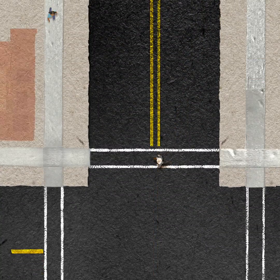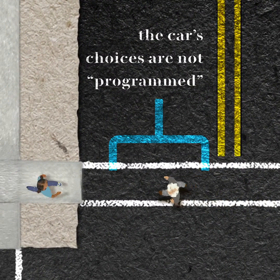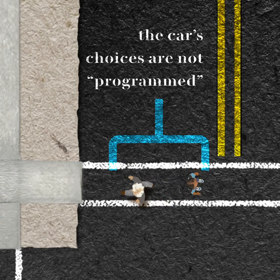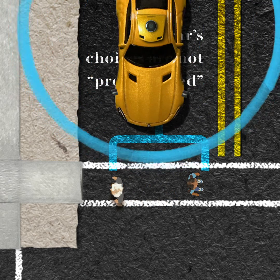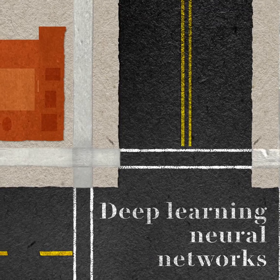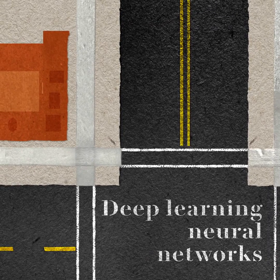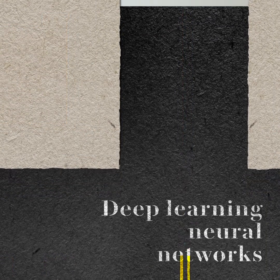There's no programmer saying, okay, car, if you see a small girl to the left and an elderly man to the right, kill the elderly man because of utilitarian ethics. Instead, what we're seeing is deep learning neural networks.